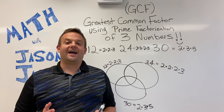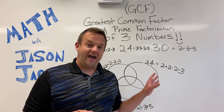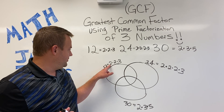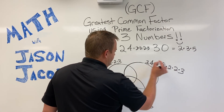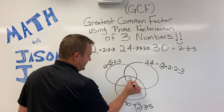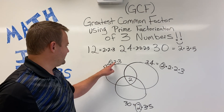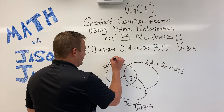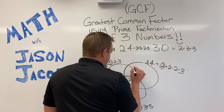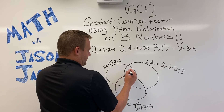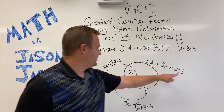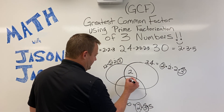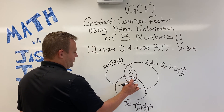Now we've got to find the common primes — which prime factors are in common with all three of them. Here's a two, here's a two, and here's a two. All three of them have a two, so we're going to put that in the middle of all three. This one has a two, this one has a two, and this one does not — so I'll put a little dot above it to mark that I used it, and place those shared twos between just those two circles. Here's a three, here's a three, and here's a three — all three of them have a prime factor of three in common, so I'm going to put that three in the middle as well.